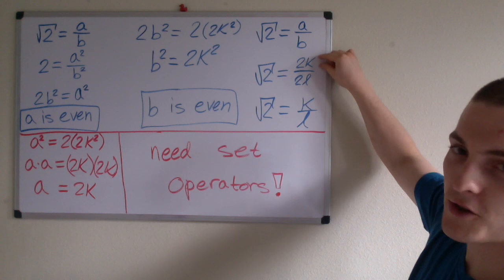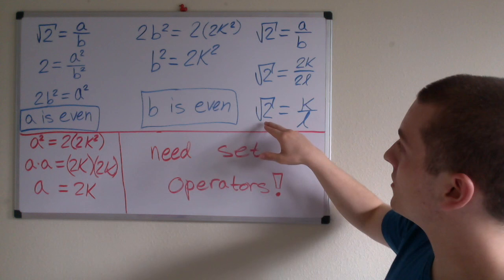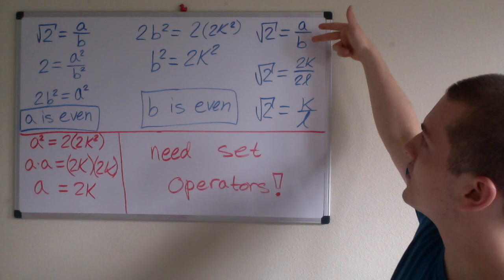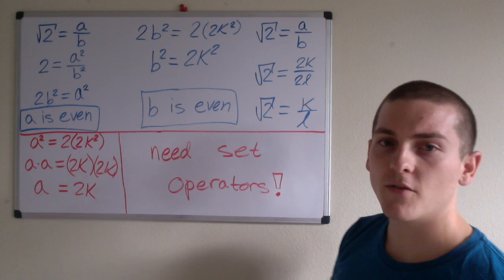But, these twos here will reduce, meaning that we'll have the square root of 2 equals k divided by l. But, since this reduced, since this is no longer explicitly represented as a divided by b, and it reduced to k divided by l, we know that we do not have a rational number.